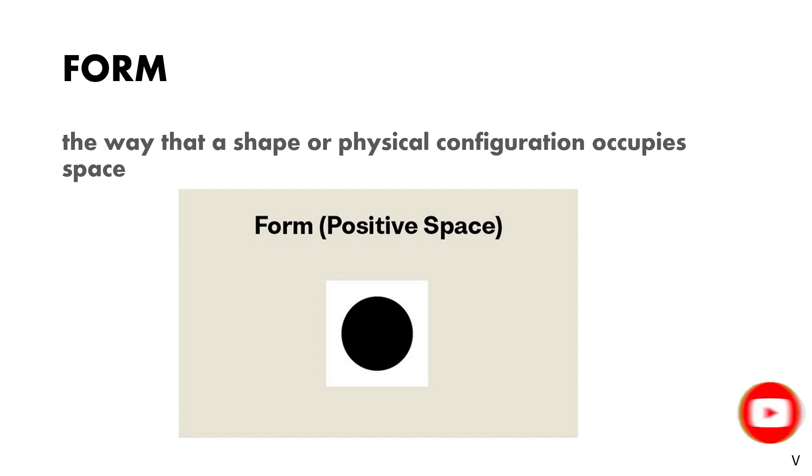It should be able to occupy area in terms of two dimensions and volume in terms of three dimensions. Now you must be confused about what is the difference between a shape and a two-dimensional form. Shape is more about the structure or just the outline, but form always represents any physical entity. Like here you can see a circle which is filled with black color. So we will say that circular shape along with the content which it occupies represents a two-dimensional form. In short, we can say shape is a subset of form, and form is also known as positive space.